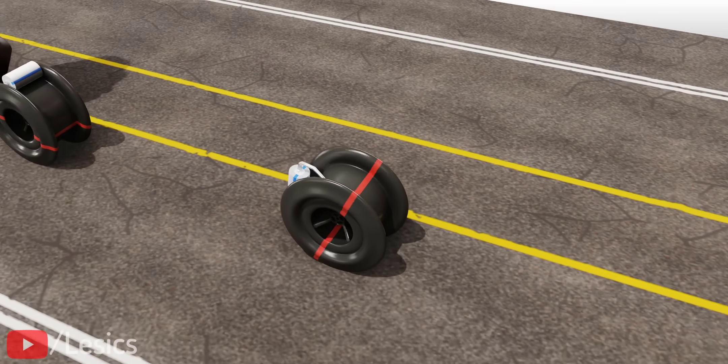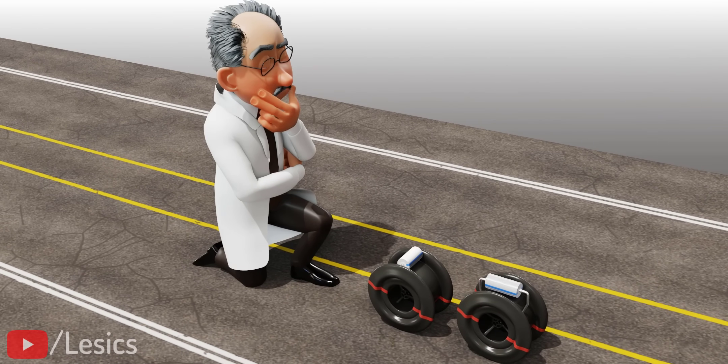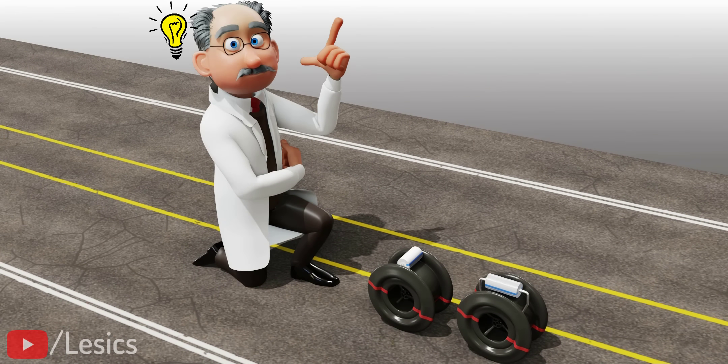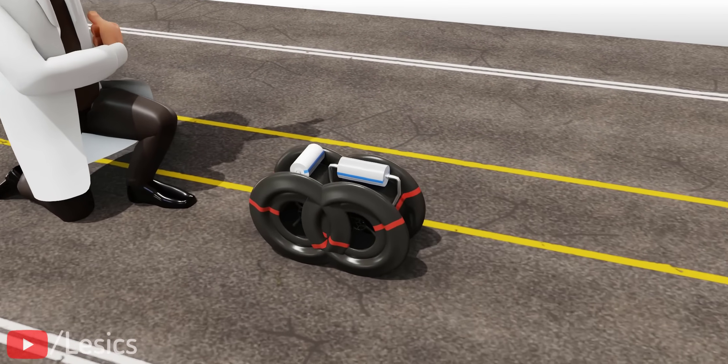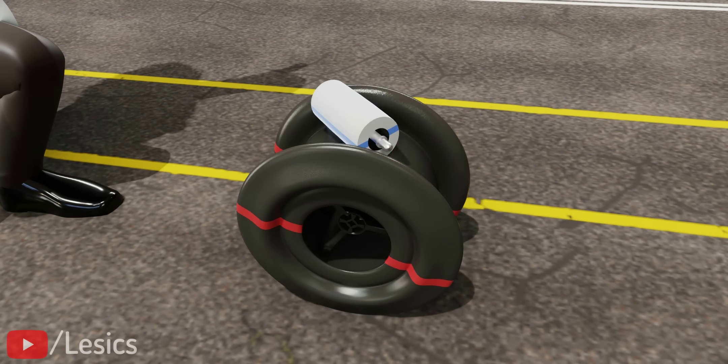The spark of genius that birthed the invention of the mechanum wheel occurred when the inventor used a roller angle in between these two extreme cases, an angle of 45 degrees.